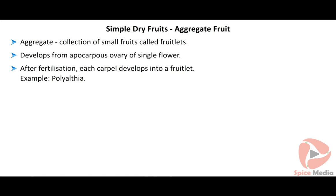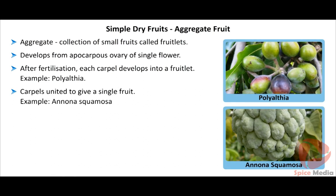Aggregate fruits develop from apocarpous ovaries of a single flower. After fertilization, each carpel develops into a fruitlet; hence there will be as many fruitlets as there are carpels in the flower. Aggregate fruit has a cluster of fruitlets attached to a common stock. Example: Polyalthia. In Ananas comosa, the margins of carpels are united and appear as a single fruit.